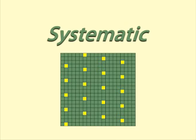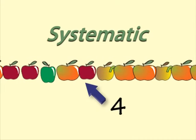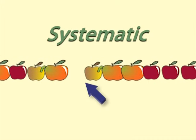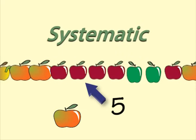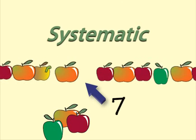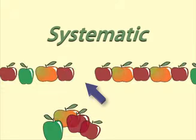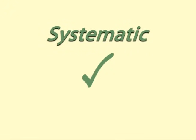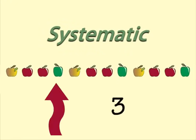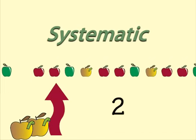With systematic sampling you choose a starting point at random and then systematically take objects at a certain number apart. For example, if there are a thousand in the population and you want a sample of 50, you would take every 20th object. Systematic samples are easier to administer than simple random samples and are usually a good approximation of a random sample. However, if there is a pattern in the population, certain types of objects could be chosen more or less often than others.